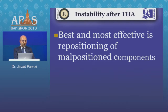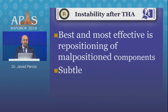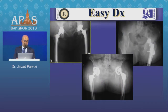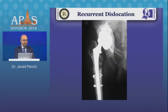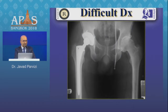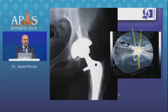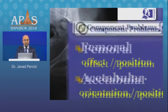The most effective strategy in prevention of recurrent dislocation is repositioning of malpositioned components. You have to remember that malpositioning can sometimes be subtle, and unless you're looking for it, you may not see it. Some patients may require additional imaging such as CT scan to assess the retroversion of the acetabular component, and possibly the version of the femoral component as well.